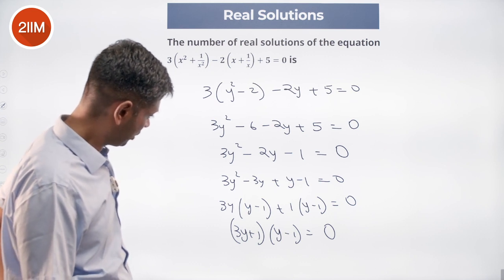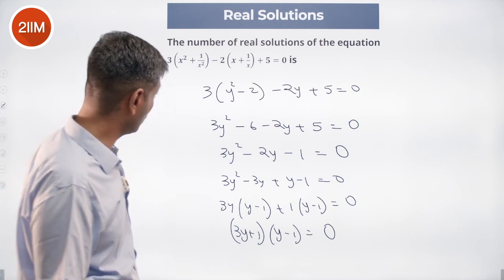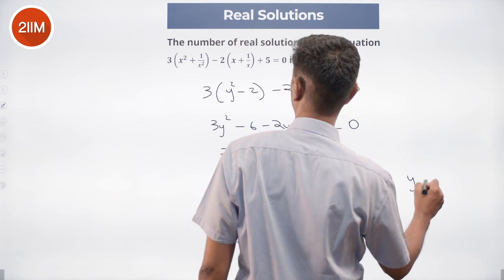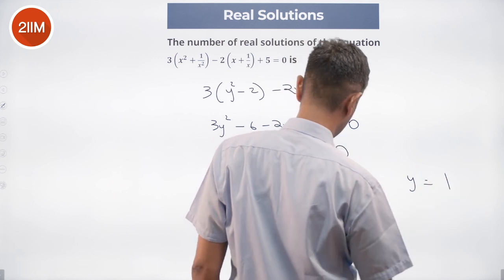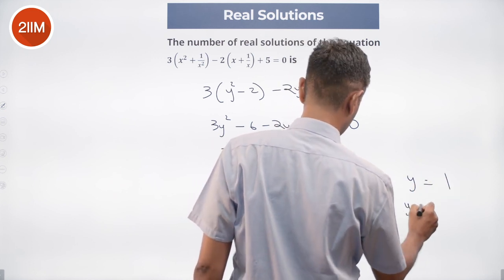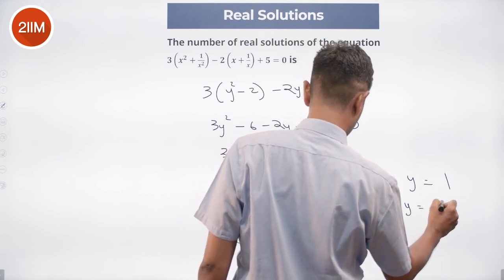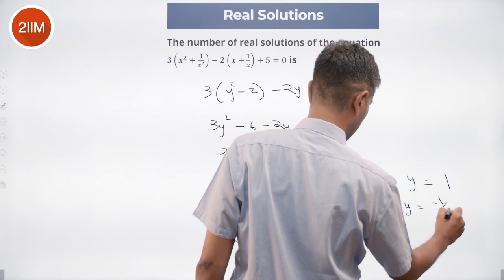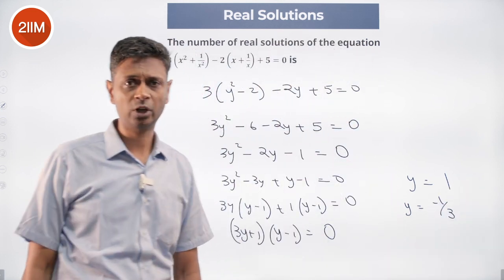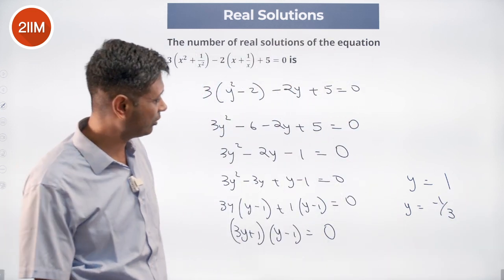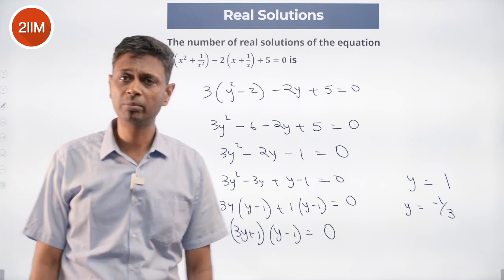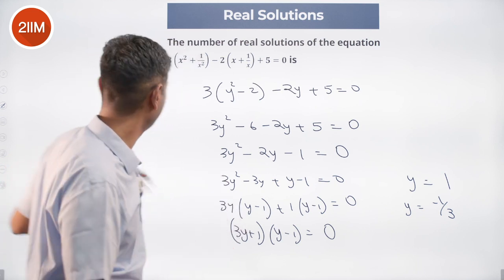Factoring: (3y plus 1)(y minus 1) equals 0. So y could be 1 or y could be minus 1 by 3. I hope you all got the same answer — y could be 1 or y could be minus 1 by 3.